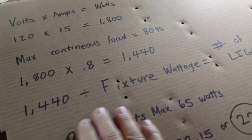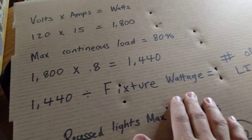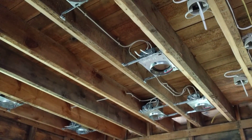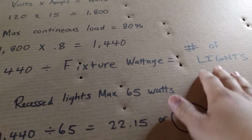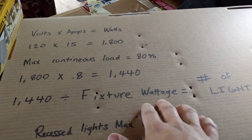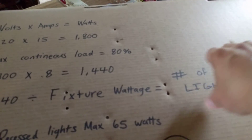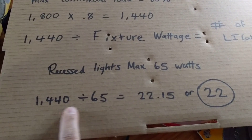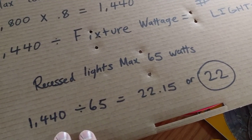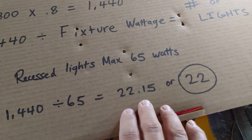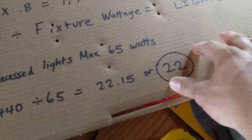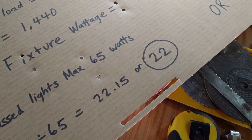So now we take our 1440 divided by our fixture wattage. Your typical recessed light incandescent bulb is usually 65 watts. You divide 1440 by your fixture wattage and that gives you your number of light fixtures. So: 1440 divided by 65 equals 22.15 fixtures, or 22 rounding down. So with that simple calculation, assuming you're going to be using incandescent, you would put 22 recessed lights on a circuit.